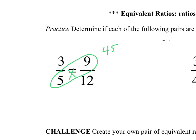I now do 12 times 3, and 12 times 3 is 36. So if I want to say that those two are equivalent, well guess what? They are not equivalent, because 36 is not equal to 45. So they are not equivalent.